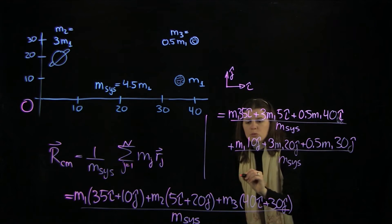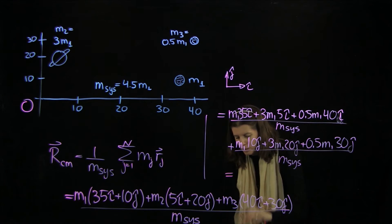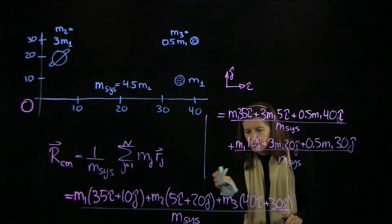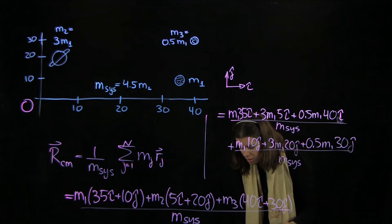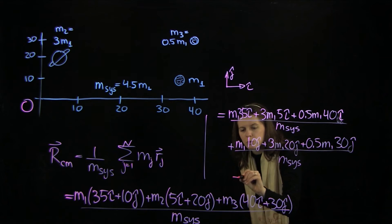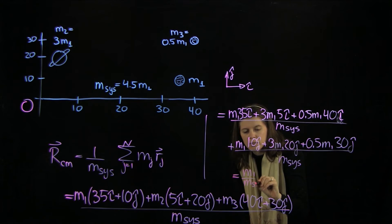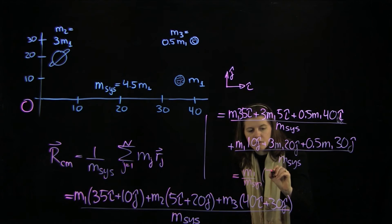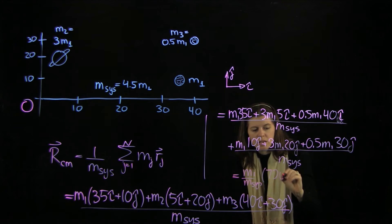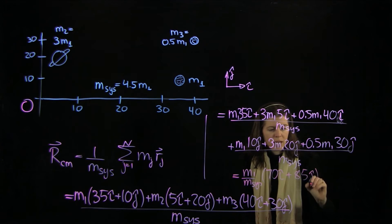So this boils down to... hang on, let me redo this again. Let me actually look at the answer first. What do I have here? 70 and 85. So this boils to m1 over the system mass, and we have 70 in the i-hat plus 85 in the j-hat direction.